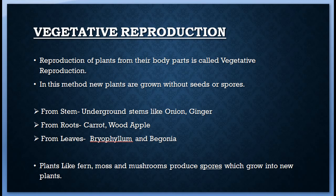Vegetative reproduction from stem: underground stems like onion and ginger can produce new plants. Plants like rose, sugarcane, and money plant can grow from stem cuttings. The stem cutting develops roots when put in moist soil.